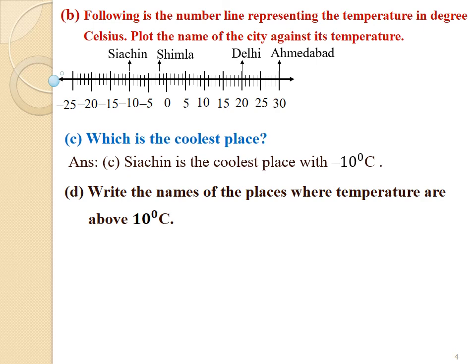Sub-question B: Write the names of the places where temperatures are above 10 degrees Celsius. The answer is Delhi and Ahmedabad, as their temperatures — 20 degrees Celsius and 30 degrees Celsius respectively — are above 10 degrees Celsius.